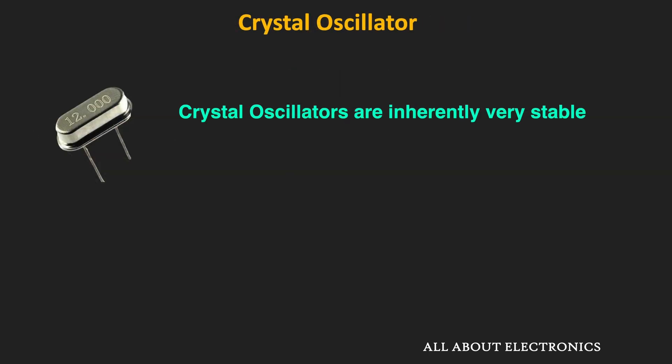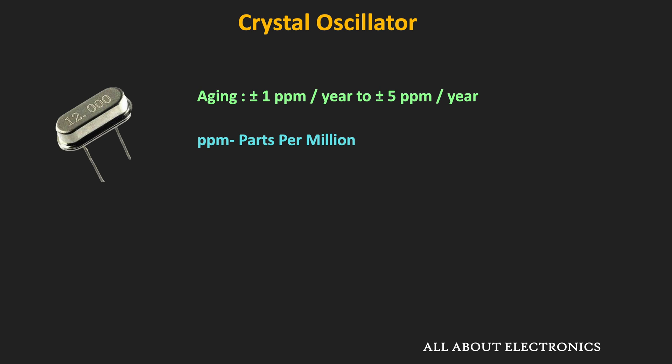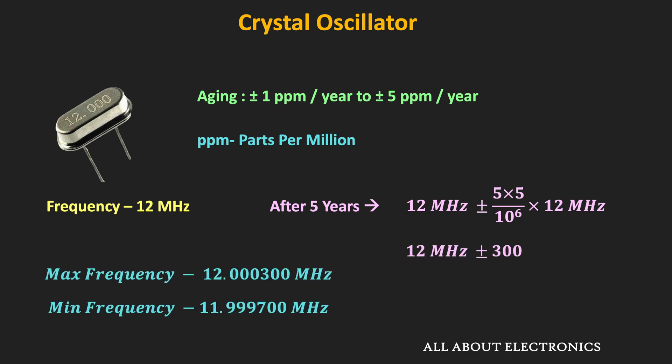Crystal oscillators are inherently very stable compared to other oscillators and produce accurate frequencies. However, certain factors can change the output frequency. One of them is the aging of the crystal. Typically with aging, the crystal oscillator frequency can change by ±1 ppm to 5 ppm over one year, where ppm stands for parts per million. For example, for a 12 MHz crystal oscillator with an aging rate of ±5 ppm over one year, after 5 years its frequency will change by 300 Hz, defining the maximum and minimum possible oscillation frequencies.